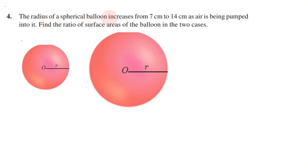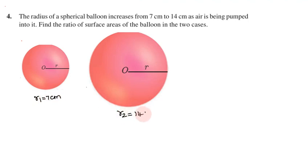When air is being pumped into a balloon, the radius of your spherical balloon increases from 7cm to 14cm. Find the ratio of the surface area of the balloon in the two cases.